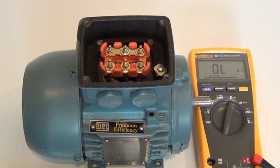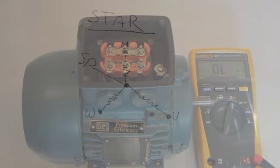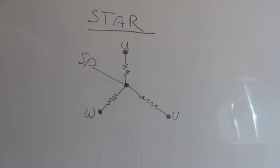So if we go back to our table. This is the configuration that the internal windings were connected in for our motor, and just for completeness I've marked on the star point.